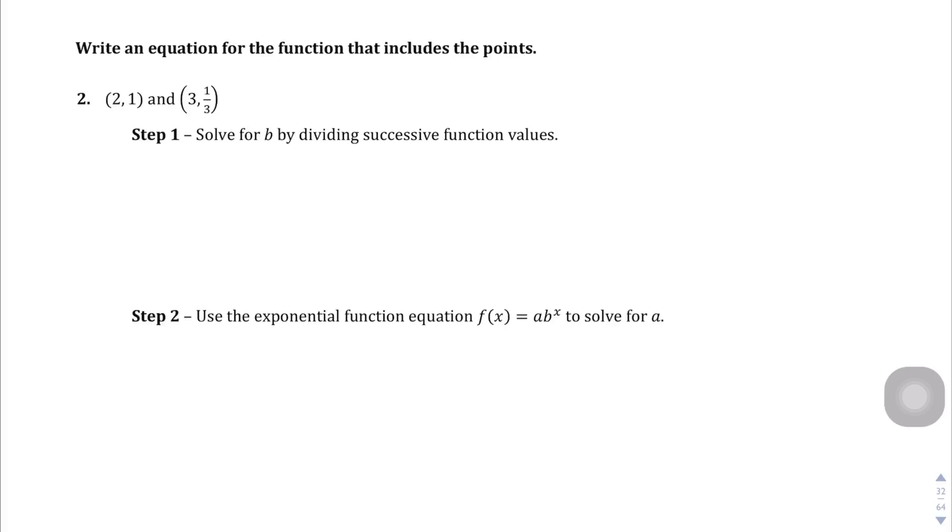Let's solve for b once again by dividing the function of 2, or sorry, taking the sequential ones. In this case, it's going to be f of 3, which is 1 third, divided by f of 2, which is 1. And so our b is going to equal 1 third, since 1 third divided by 1 is just 1 third.